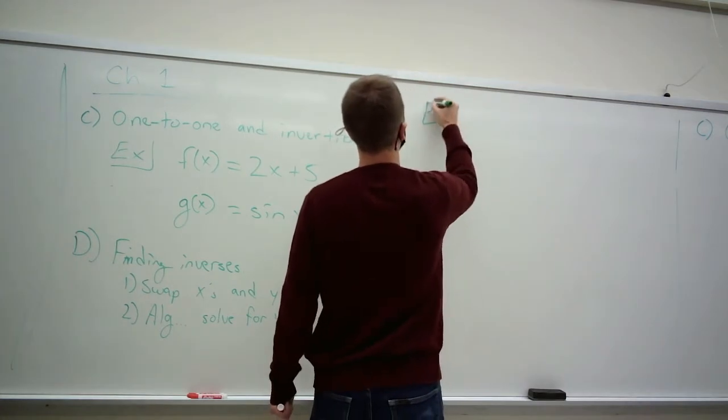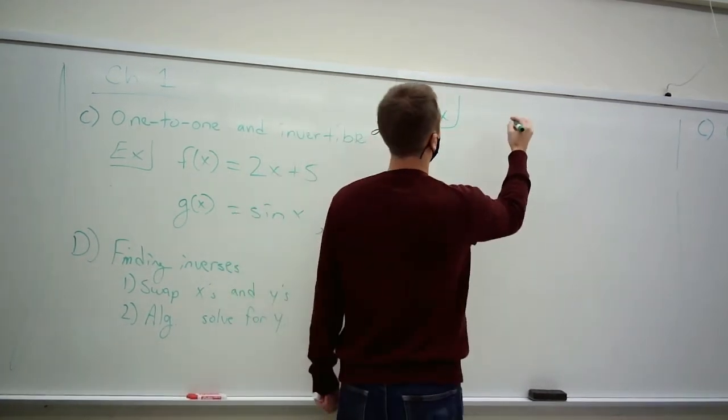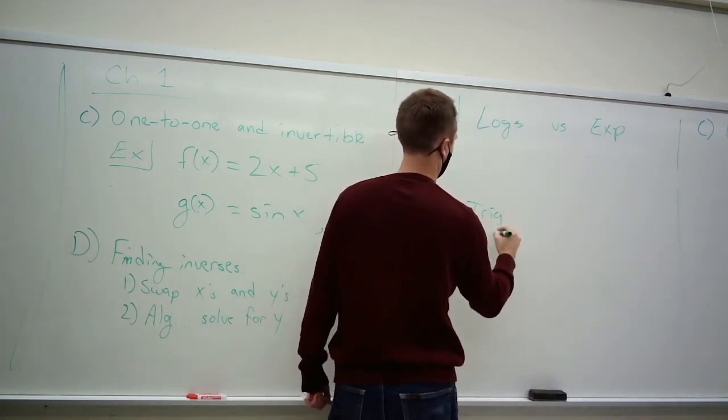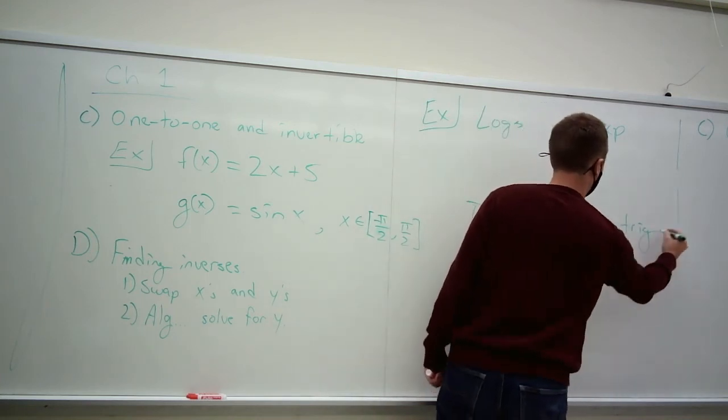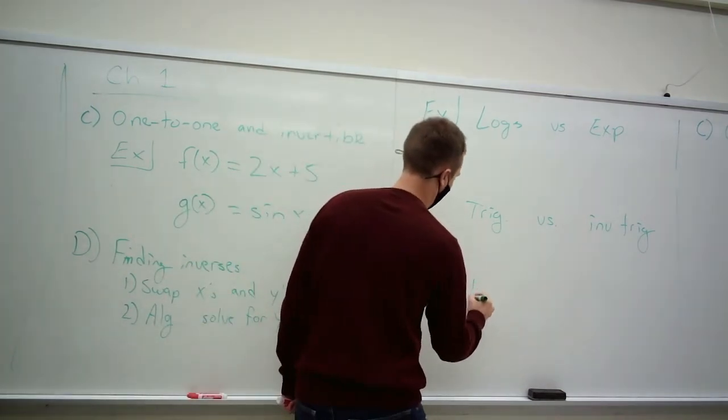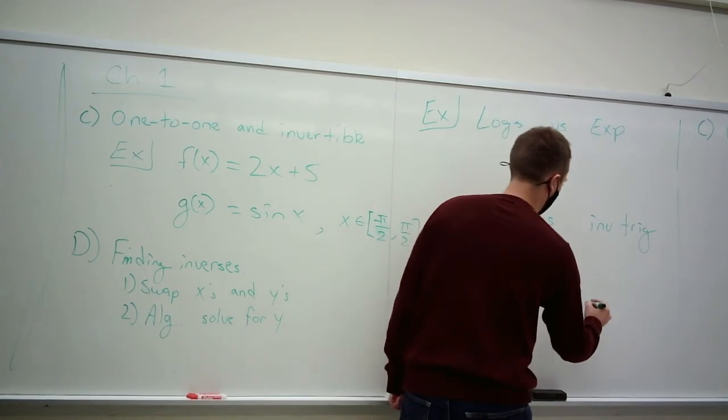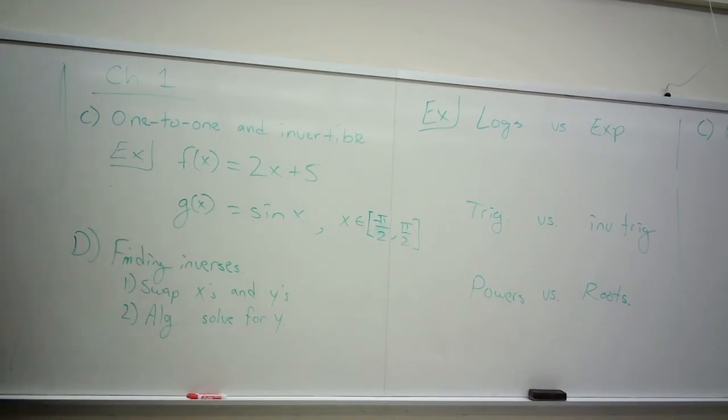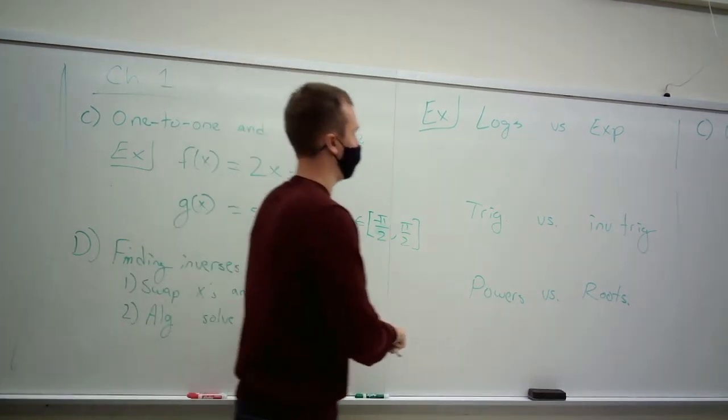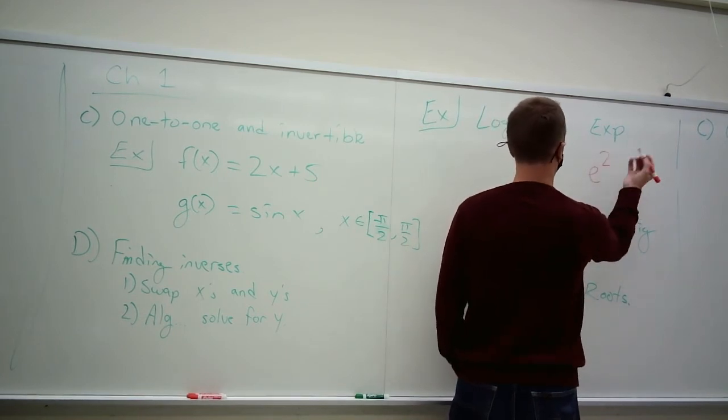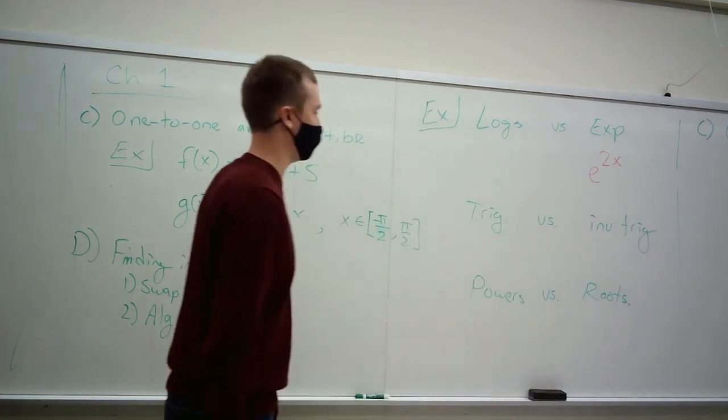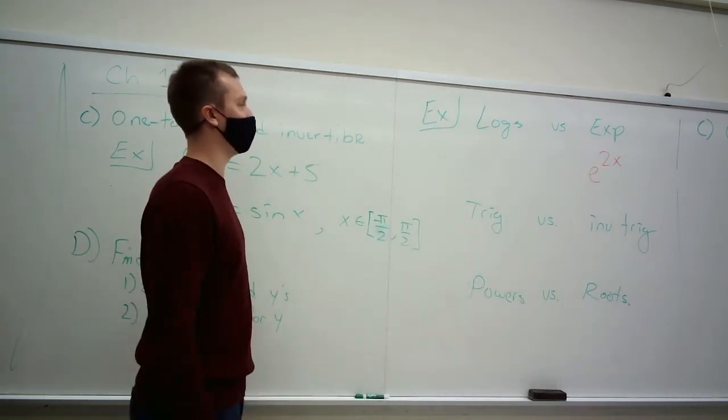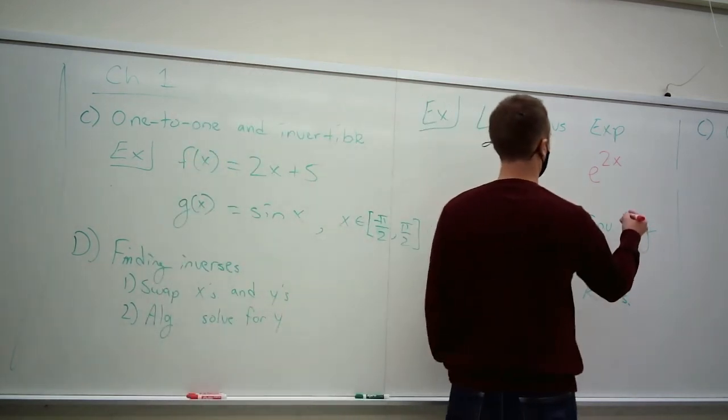So what are some of these inverses? We had logs and exponentials, we had trig functions and the inverse trig functions, we had polynomials or powers and we had roots. So I'll give you just real quick three examples of these kinds of things. So if I gave you some random exponential, say e to the 2x, what's its inverse? Well, we remember that this base is what determines the log base in the inverse.